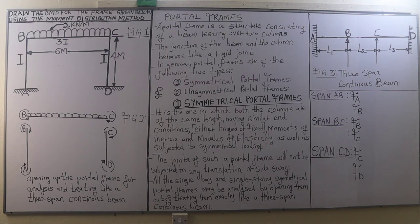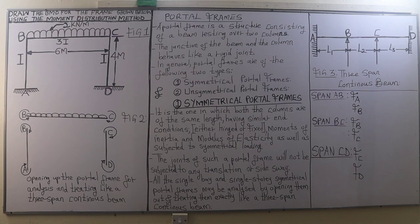The junction of the beam and the column behaves like a rigid joint. For example, in Figure 1 we have a portal frame with a beam supported by two columns: column AB and column CD. The junction at B as well as the junction at C behave like rigid joints. In metallic portal frames, joints B and C are usually welded — that is, the beam is welded on the two supporting columns.